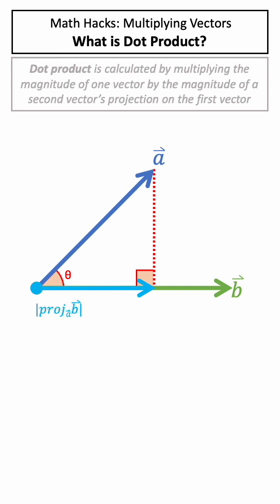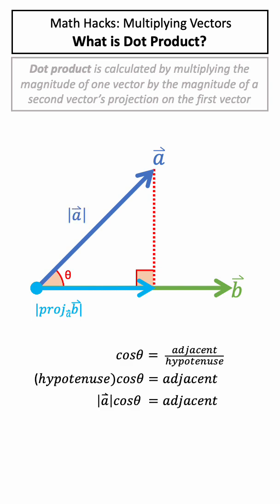Now to calculate the dot product, we need to multiply the magnitude of this projection by the magnitude of B. So how do we solve for the magnitude of our projection? Well, this projection creates a right angle triangle, and we can use SOH CAH TOA to solve for the magnitude of this projection, which is shown here.